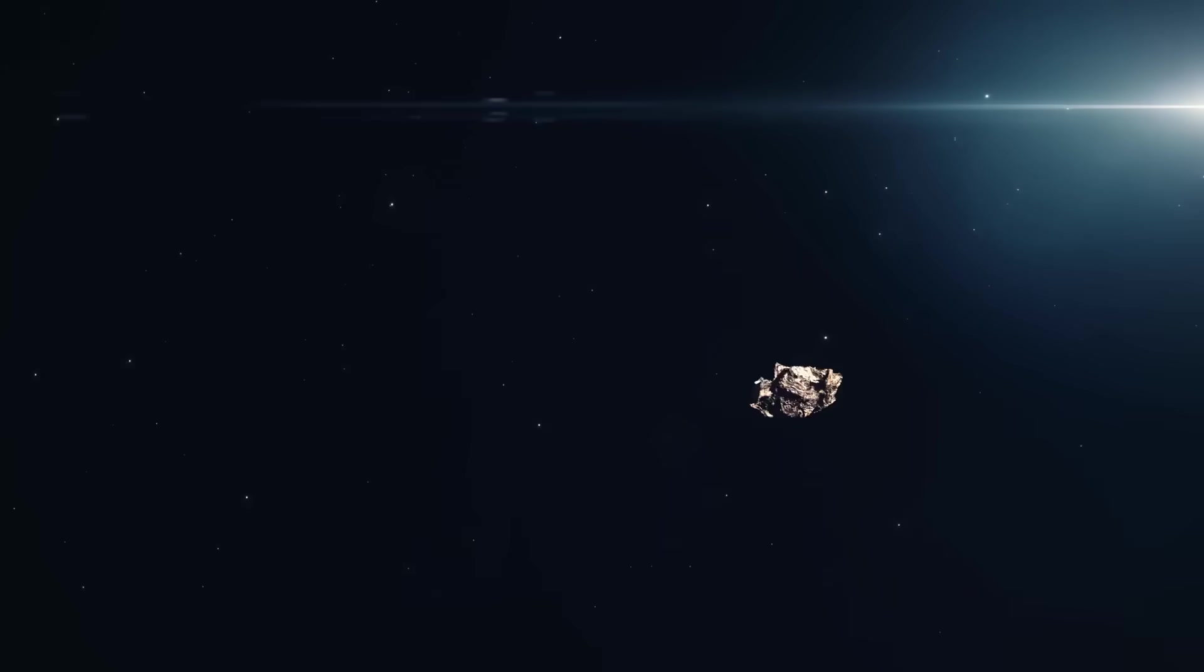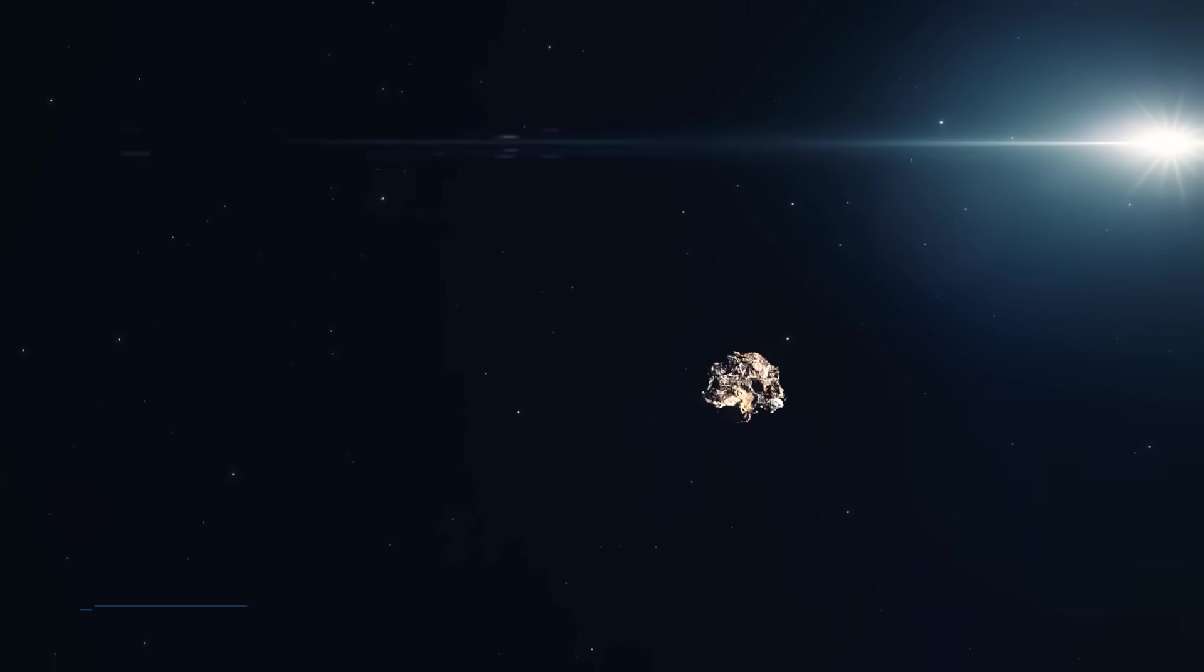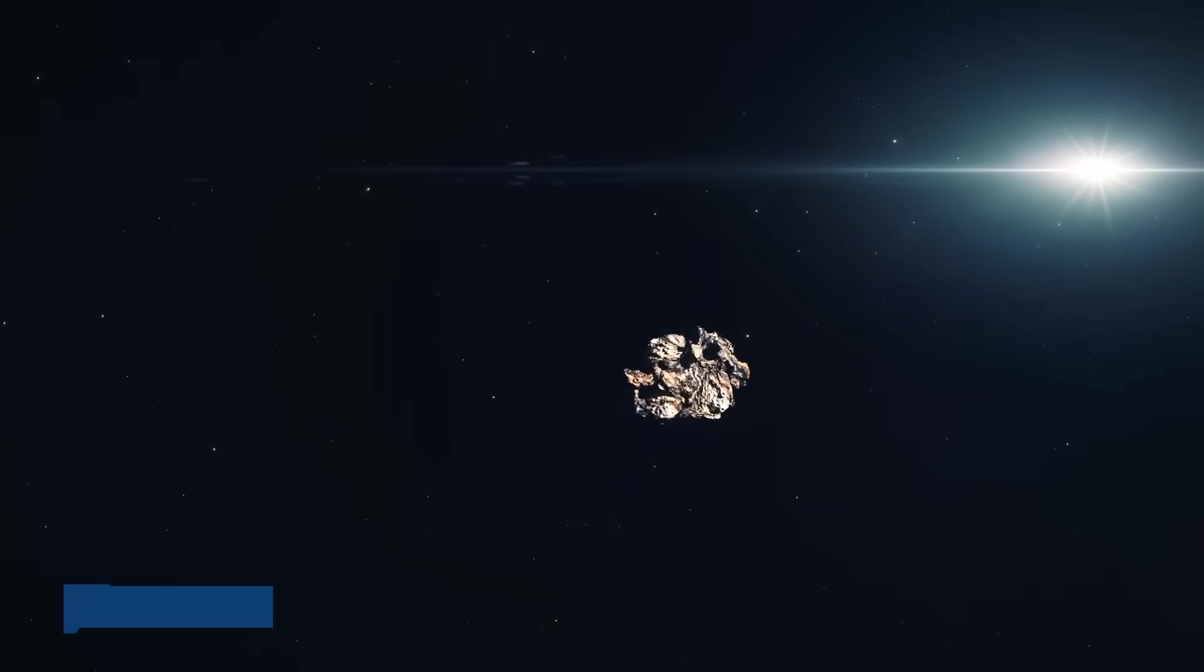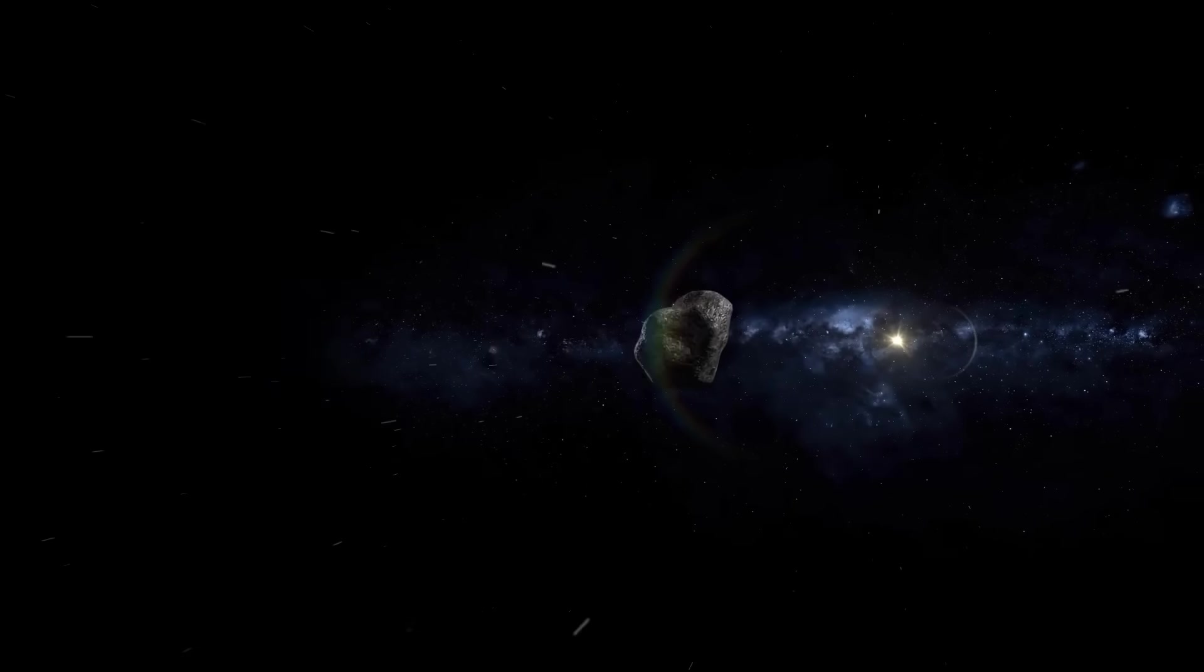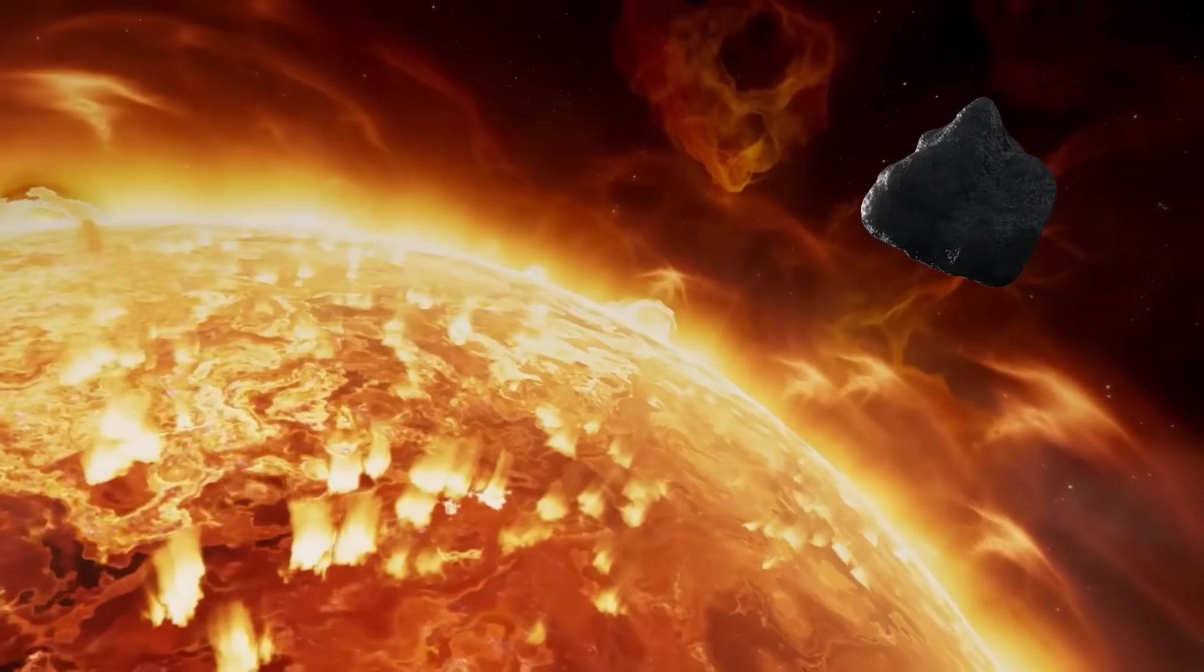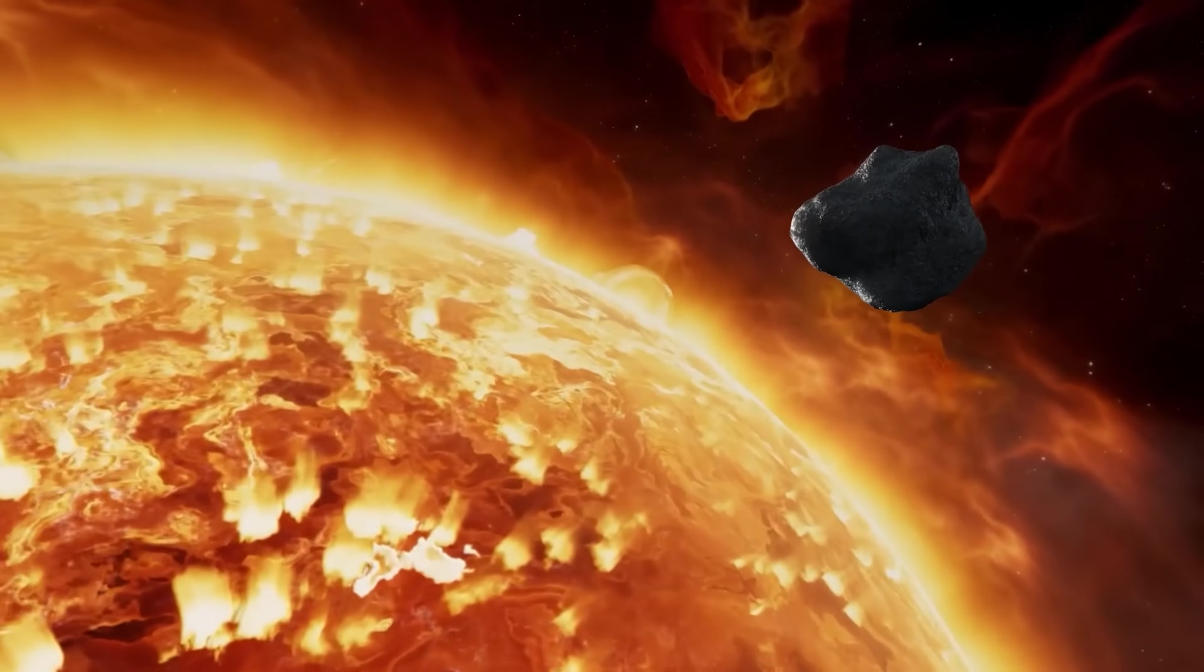The velocity of 3I-Atlas was another critical factor. Traveling at an astonishing speed of roughly 120,000 miles per hour relative to the Sun, it zipped through our system like a cosmic bullet. Such immense speed meant its interaction with the Sun was fleeting but incredibly energetic.